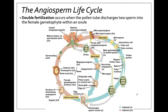This is the angiosperm life cycle — something you're going to need to know. Let's start with the 2N sporophyte parent, which is a mature flower. We've got the female megasporangium — each of these ovules is a megasporangium — and it's going to undergo meiosis. This is where we go from diploid to haploid.